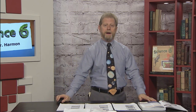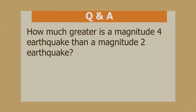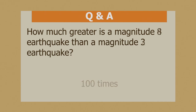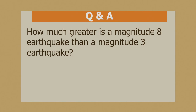How much greater is a magnitude four earthquake than a magnitude three? Ten times. How about a four compared to a two? You multiply: ten times ten equals a hundred times stronger. How about an eight compared to a three? Going from three to four, five, six, seven, eight — that's five steps of ten, so it's a hundred thousand times greater. From three to four is ten, four to five is a hundred, and so on up to a hundred thousand.